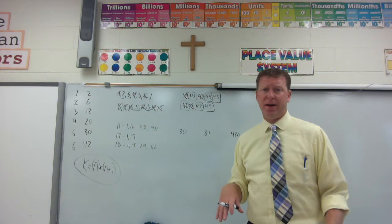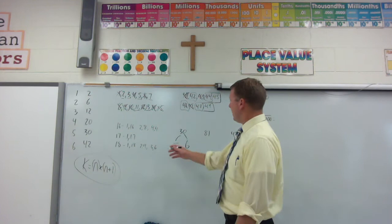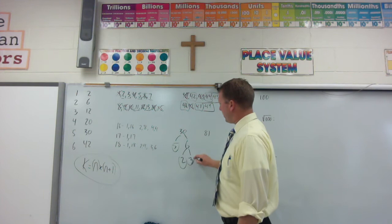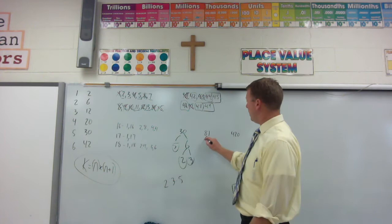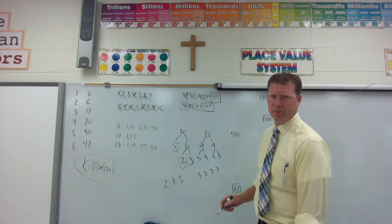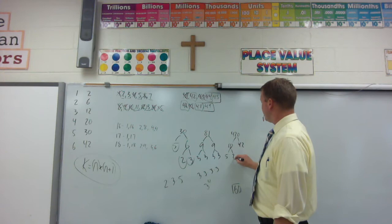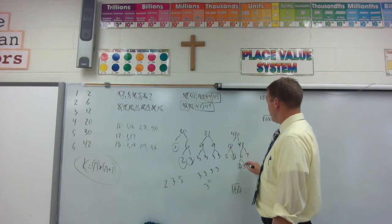Example 4: write the prime factorization of 30, 81, and 420. I'll use factor trees. For 30: I go to 5 and 6; 6 breaks into 2 and 3. Written in order: 2 times 3 times 5. For 81: 9 times 9; each 9 breaks into 3 and 3. So it's 3 times 3 times 3 times 3. In the future we'll write this as 3 to the 4th power. For 420, your book already did it — 10 times 42, then 10 breaks into 5 and 2, 42 into 6 and 7, and 6 into 2 and 3. The result is 2 times 2 times 3 times 5 times 7.